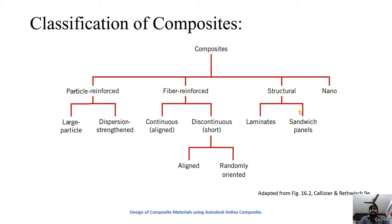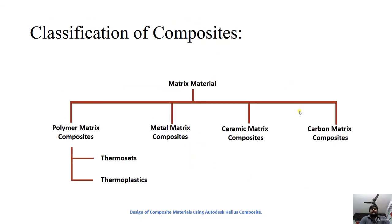Fiber reinforced composites are divided into continuous and discontinuous types. Discontinuous composites can be further aligned or randomly oriented. Structural composites are divided into laminates and sandwich panels, which will be discussed in further slides.